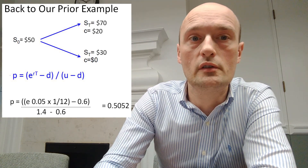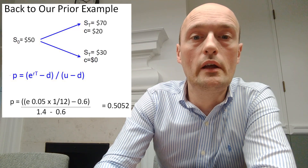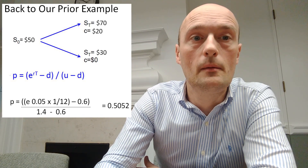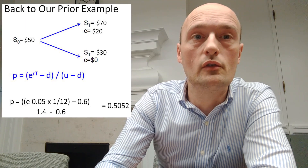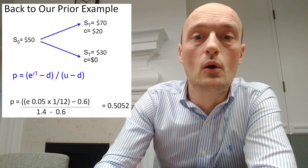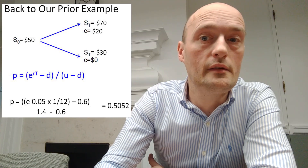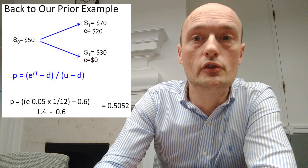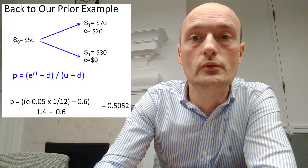We plug all those numbers into our formula and calculate p, which comes out to be 0.5052. Then all we have to do is multiply through our other formula: p — which is 0.5052 — times the value of the derivative in the up node, which is 20, plus one minus p times zero. Anything multiplied by zero is zero, so it's really 0.5052 times 20, present valued, which gives us the value of our derivative. When we do that calculation we come up with the same number we calculated last time — both methods give the same result.